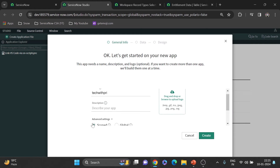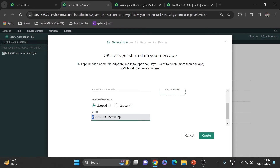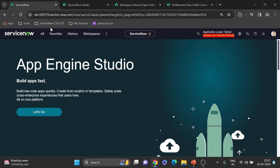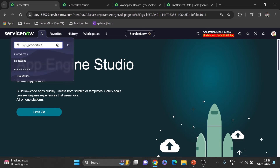Next comes the instance customer prefix — a string of two to five characters. ServiceNow generates this prefix for each customer, and this information is stored in sys_properties. Let me open sys_properties.list and search for it. You'll see it is read-only based on the protection policy — it's automatically generated. For a PDI it's a default value like '570853', but if you purchase ServiceNow you can have your own prefix.